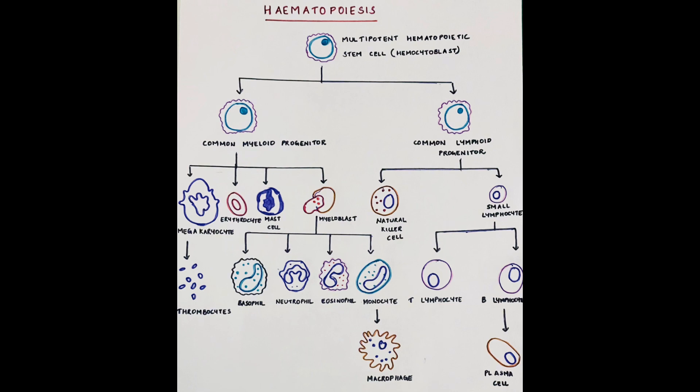It also leads to the differentiation of megakaryocytes into platelets, or erythroblasts into erythrocytes. The common lymphoid progenitor differentiates into a lymphoblast, resulting in the development of natural killer cells or lymphocytes — that is T-lymphocytes and B-lymphocytes. Once B-cells get activated in the secondary lymphoid organ, they further differentiate into plasma cells, and these plasma cells secrete antibodies.